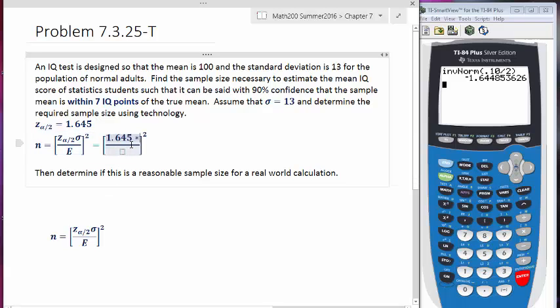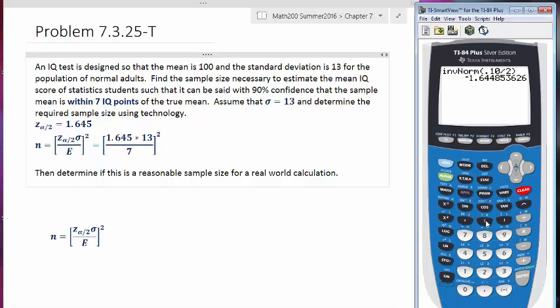We have Z sub alpha over 2, we have the standard deviation of 13, and we have a sample size of 7. So let's put this in our calculator. Let's start off with parentheses, and then 1.645. We'll multiply it times 13, and then we'll divide this by 7. We'll close parentheses and square it, and then hit enter.